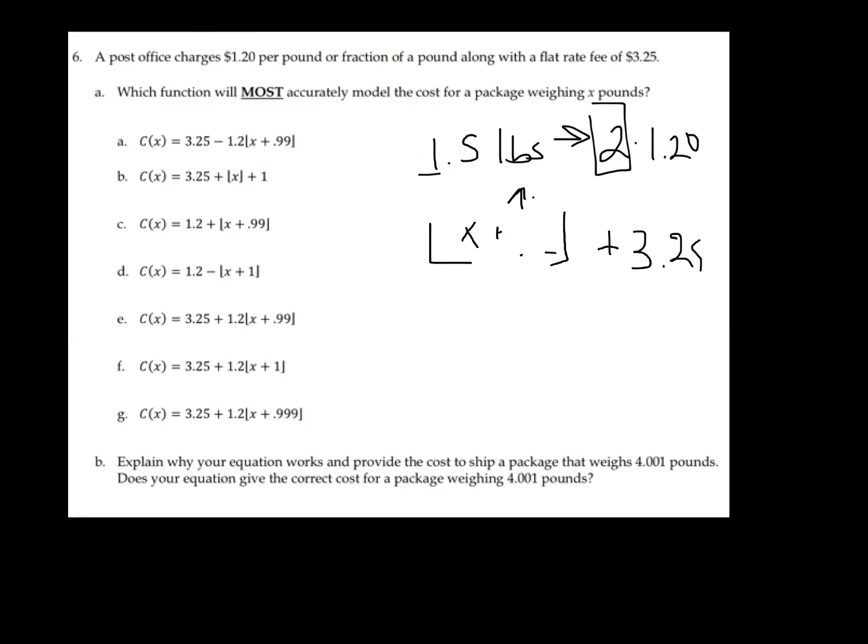And of course, we can't forget that what are we doing with the number of pounds that we have? Well, we're going to multiply it by the price, which is $1.20. So let's just use that to go through and find everything that matches up with that. So A looks all right, but notice I am subtracting the two. Not so good.